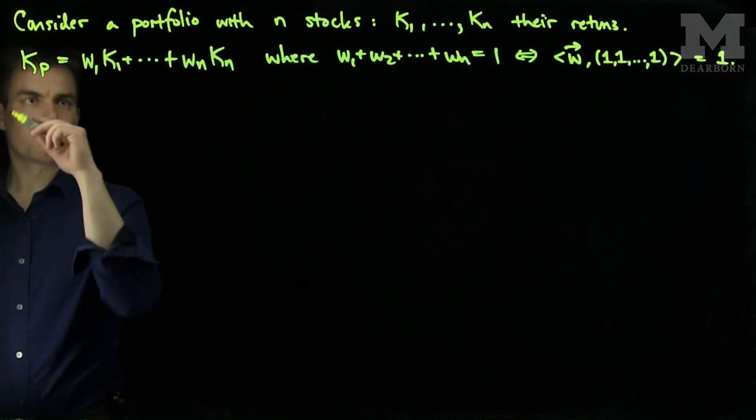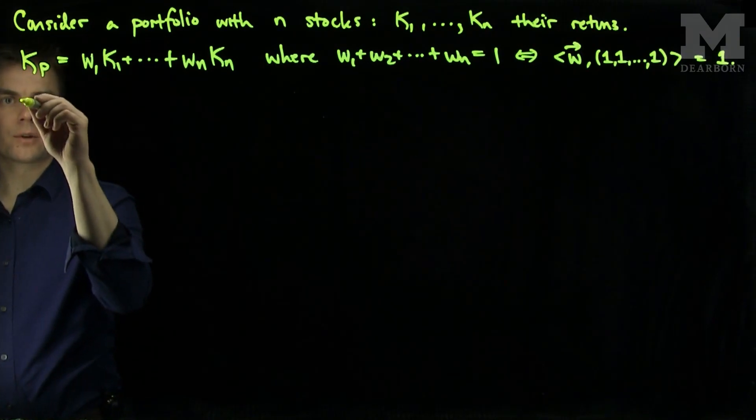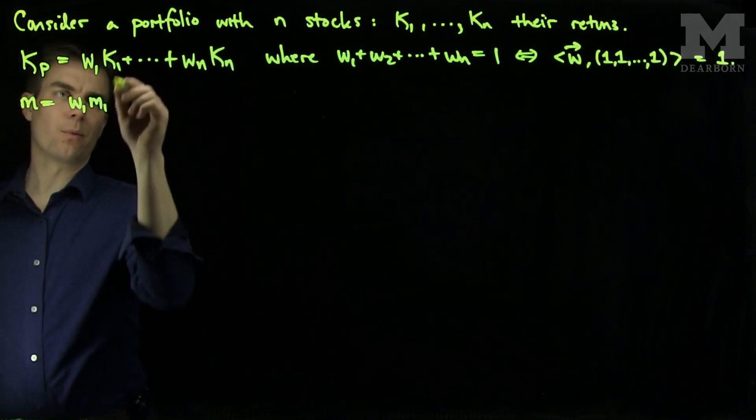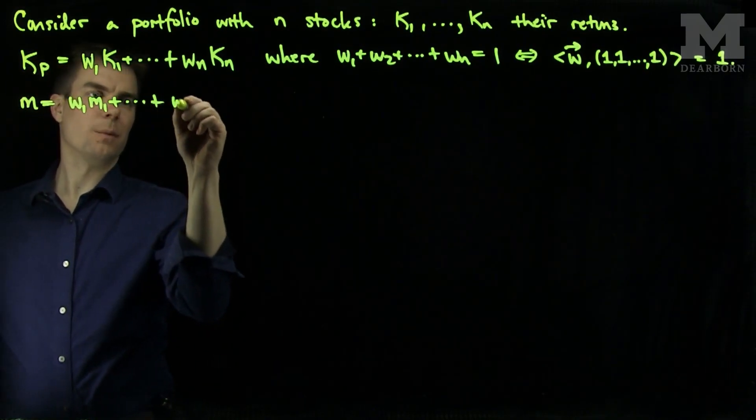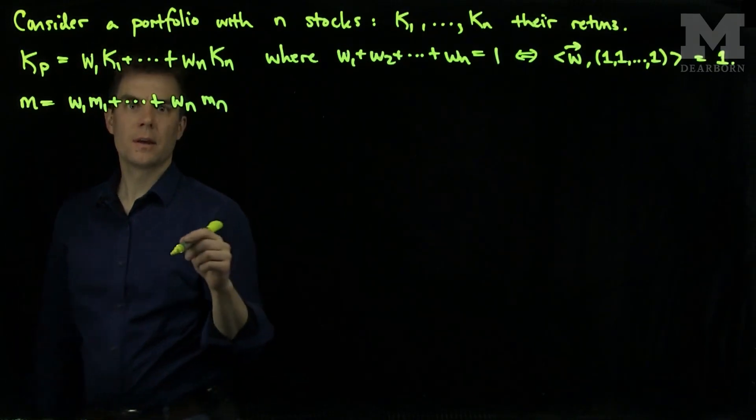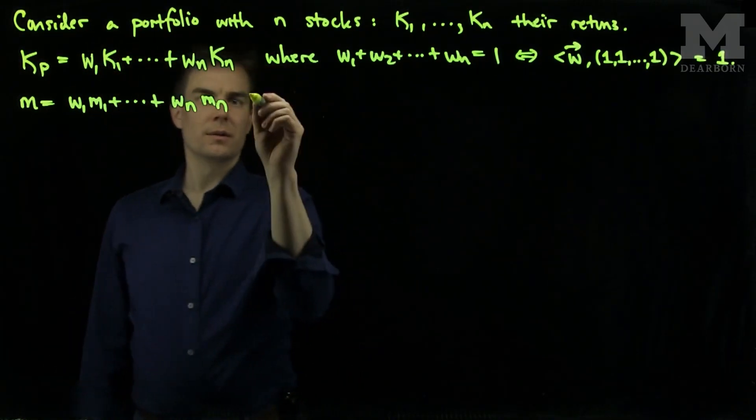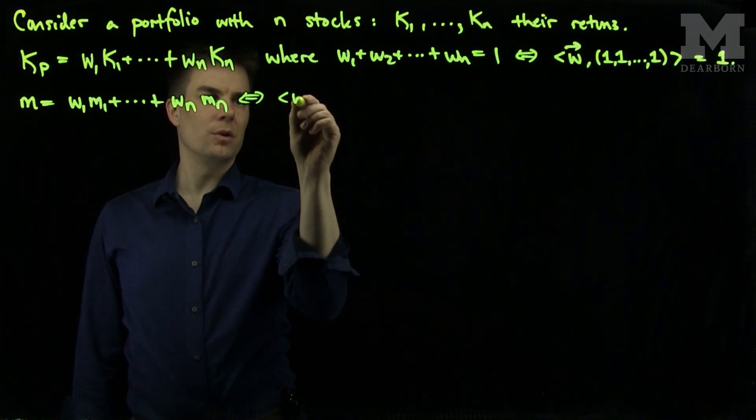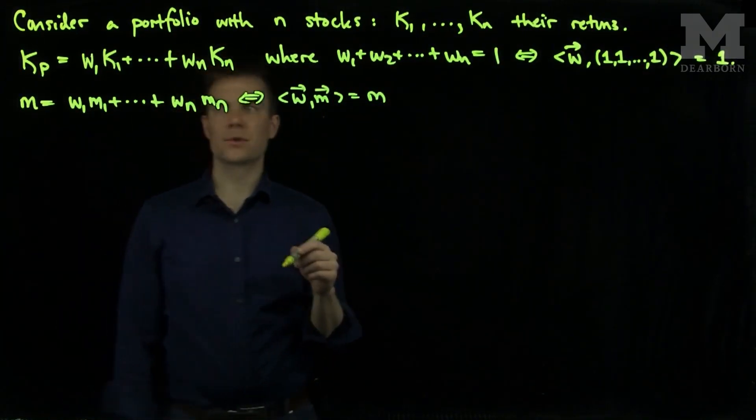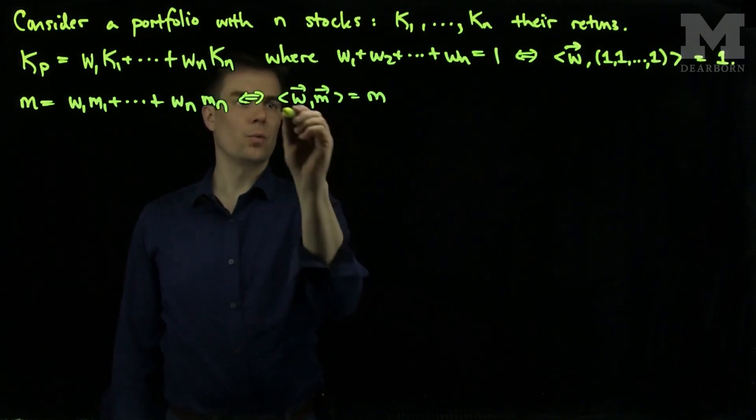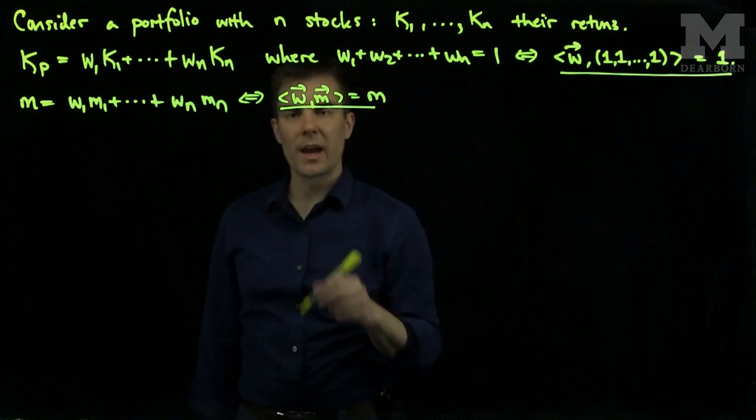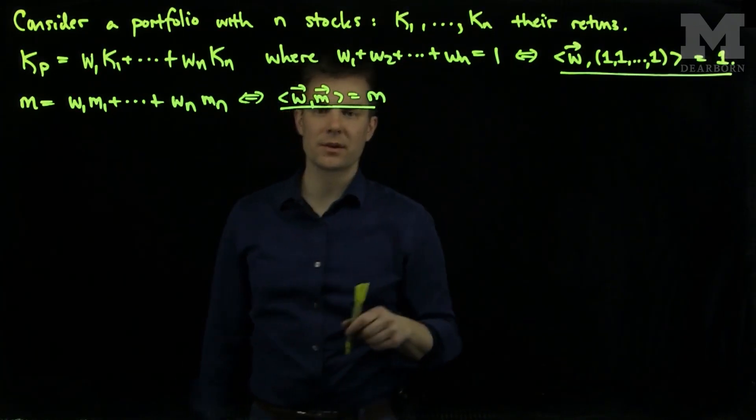We can therefore find what the expected value of this is, so the expected return m will be w1 m1, where m1 is the expected value of K1, plus wn mn. And we can write this condition as the vector w and the vector m of returns equals a fixed number m. So those are constraints of the problem. The weights have to add up to 1 and the expected values have to satisfy this inner product relationship.